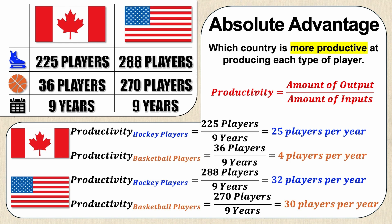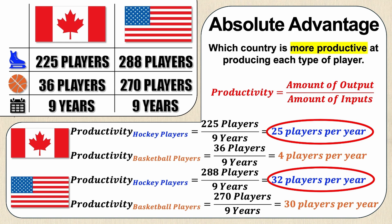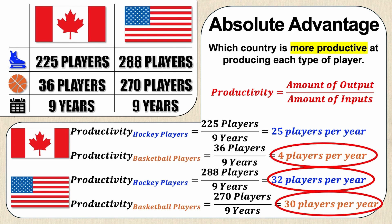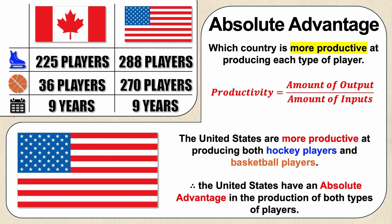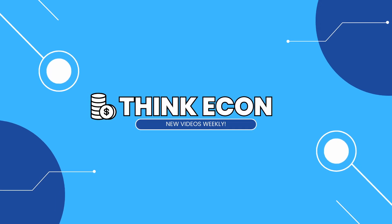Now we said that the absolute advantage is when a country is more productive at producing. So first we're going to look at the productivity of hockey players for the two countries. Comparing 25 and 32, 32 is greater, so we would say that the United States is more productive at producing hockey players. Comparing four players to 30 players for basketball productivity, 30 is greater than four, and therefore the United States are also more productive at producing basketball players. To summarize: the United States are more productive at producing both hockey players and basketball players, and therefore the United States have an absolute advantage in the production of both types of players.